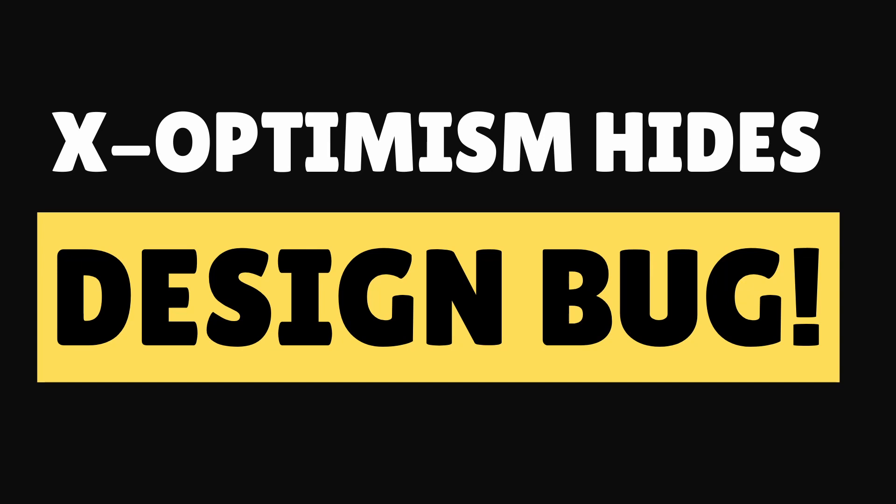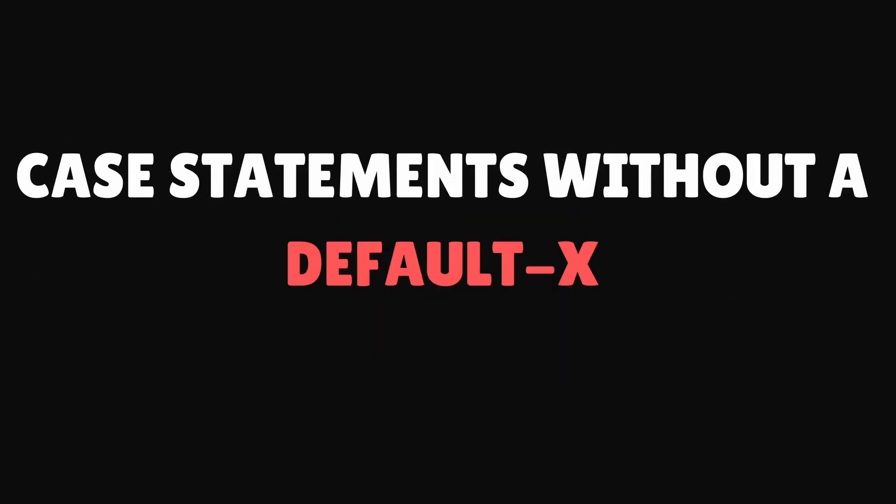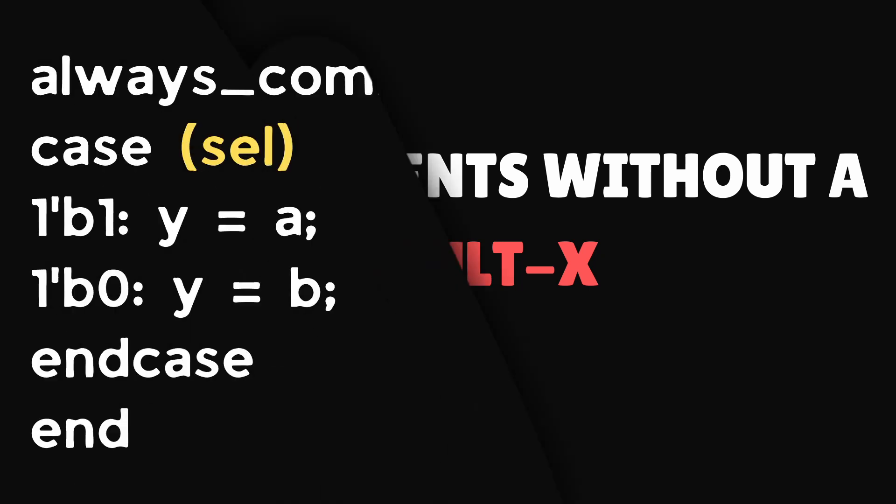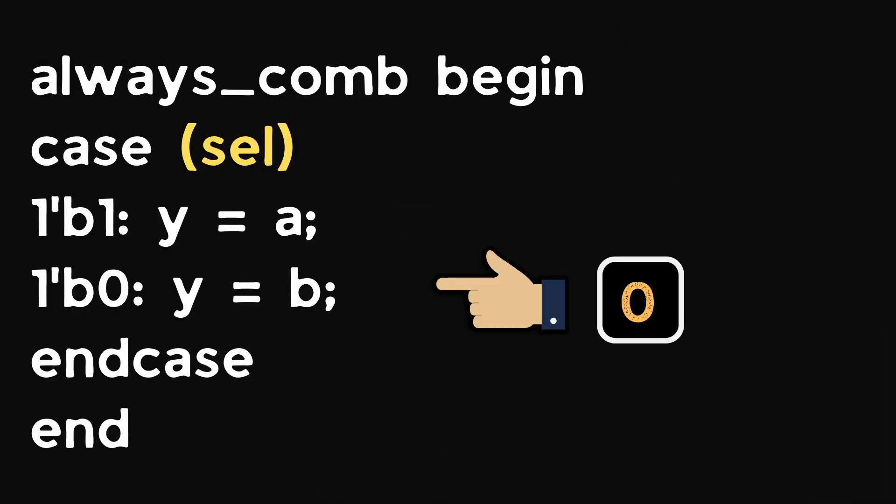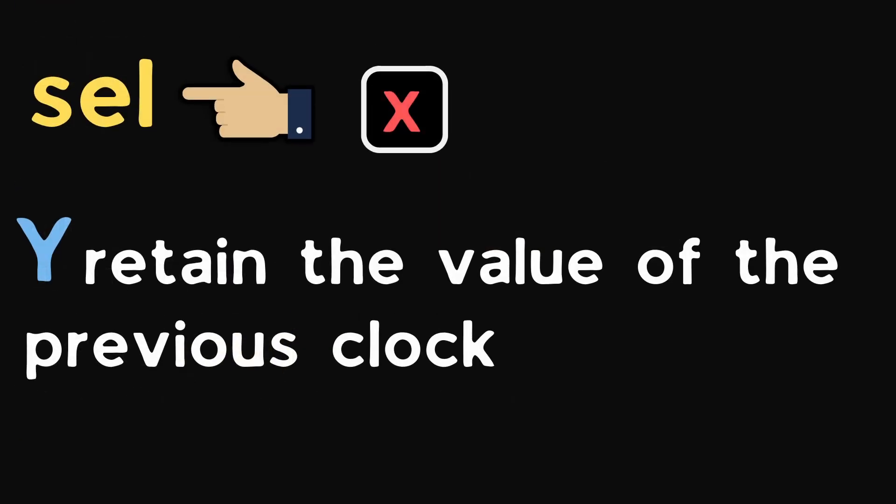Now let's see the second example of Verilog X optimism, a simple multiplexer with a case statement having no default state. When select is 1, Y equals to A. When select is 0, Y equals to B. When select is X, Y will retain the previous clock value, a completely different behavior than a designed multiplexer. This is potentially hiding the design problems.